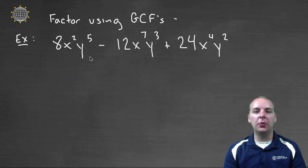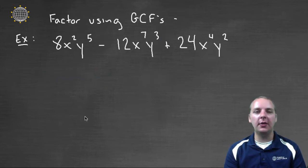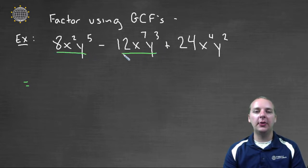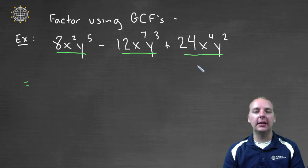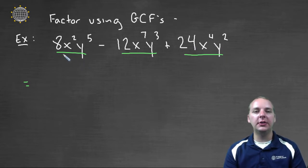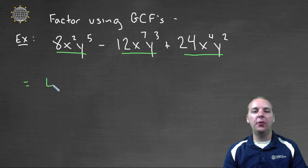Let's wrap up with one last example. This one has two variables, but that's no big deal. We're looking for the GCF of eight x squared y to the fifth, twelve x to the seventh y to the third, and twenty-four x to the fourth y to the second. Starting with the coefficients: the GCF of eight, twelve, and twenty-four is four.